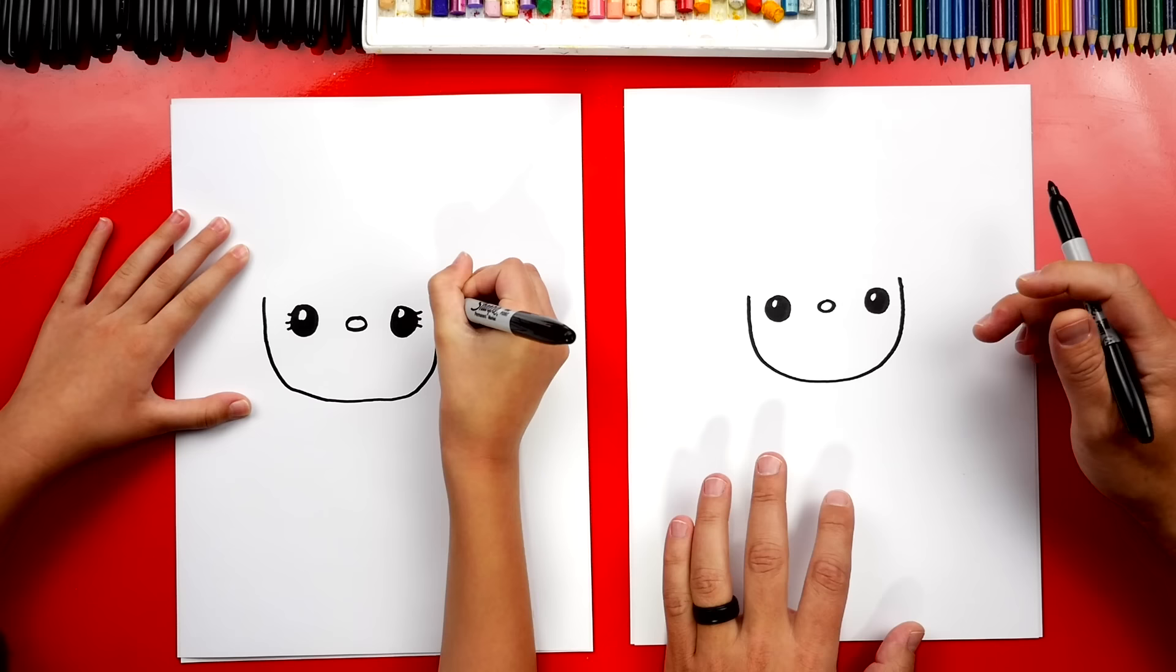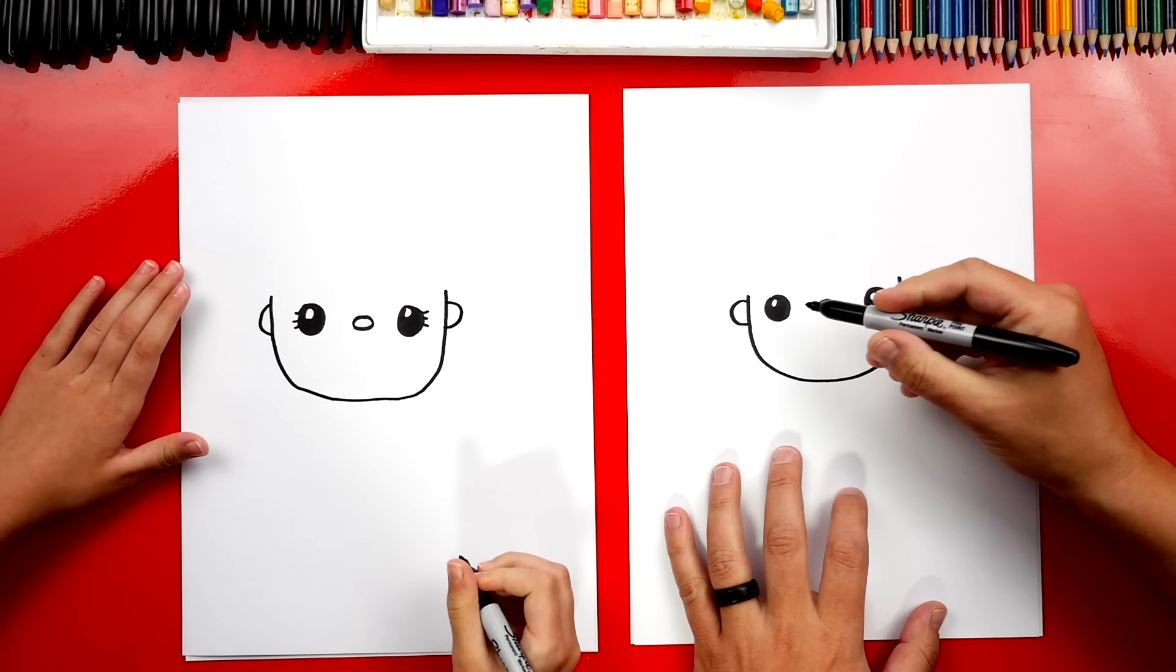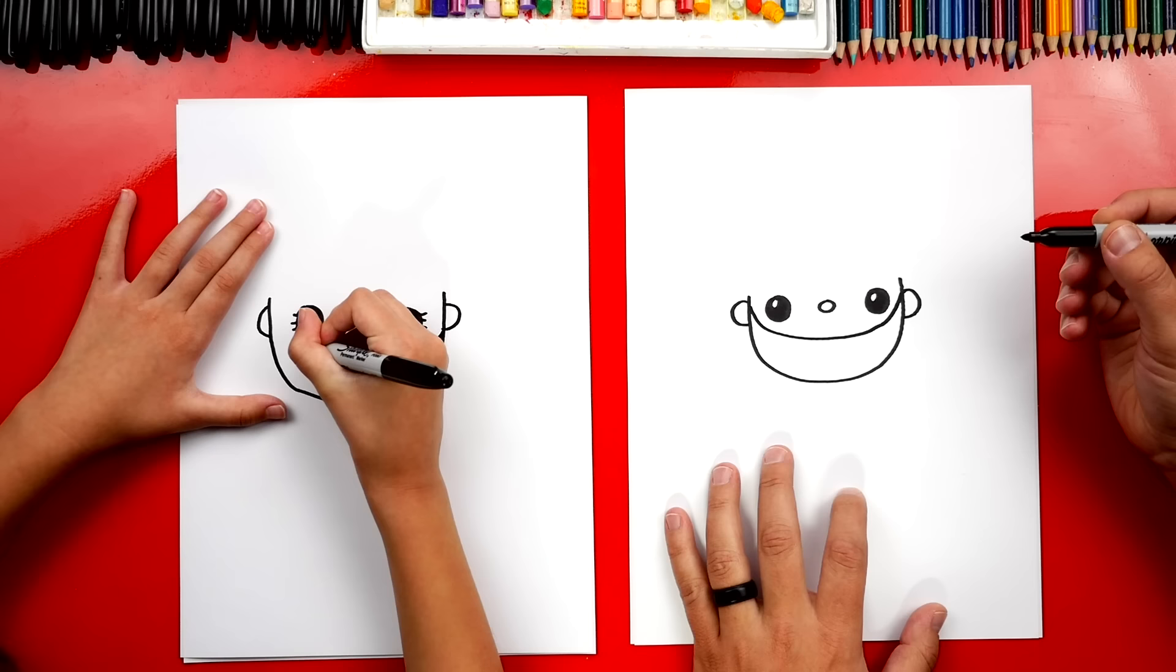Perfect. Now let's draw the ears. We're gonna draw one C shape over here and a backward C over here. And I'm drawing them right in line with the eye. Okay, now let's draw the mask. We're gonna draw a curve that comes under the eye around and then back up over here and connect to the ear.